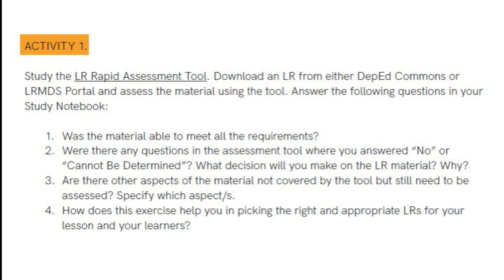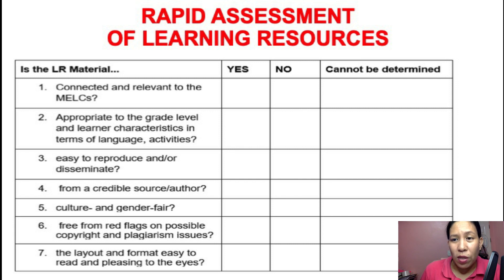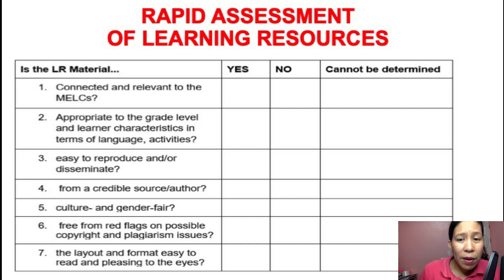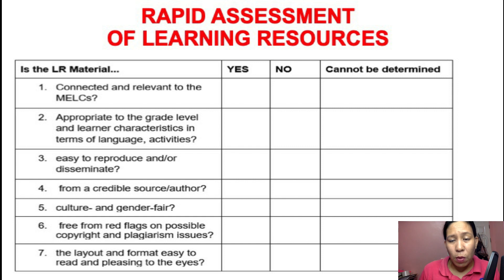And fourth, how does this exercise help you in picking the right and appropriate LRs for your lesson and your learners? Here's the Rapid Assessment of Learning Resources tool with seven criteria to answer. First, is the LR material connected and relevant to the MELCs? Second, is the LR material appropriate to the grade level and the learner characteristics in terms of language and activities? Third, is the LR material easy to reproduce and or disseminate? Fourth, is the LR material from a credible source or author? Fifth, is the LR material culture and gender fair? Sixth, is the LR material free from red flags on possible copyright and plagiarism issues? And seventh, is the LR material's layout and format easy to read and pleasing to the eyes?